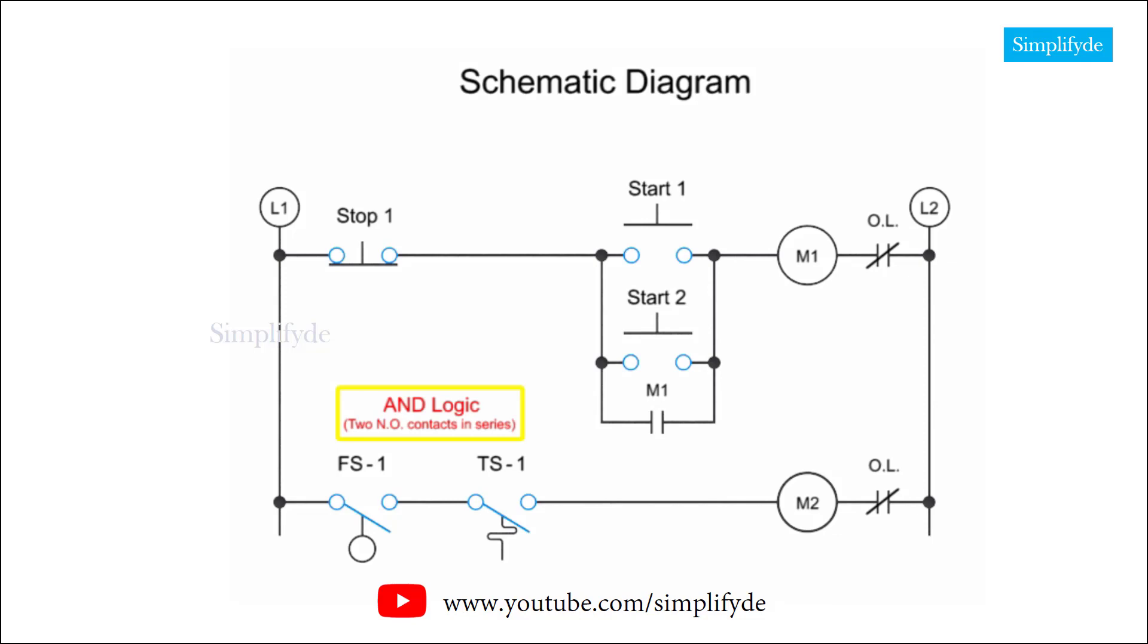AND logic is present when there are normally open control devices connected in series. Here we have two automatic switches. The motor coil M2 will only be energized if both floating switch 1 and temperature switch 1 are closed.